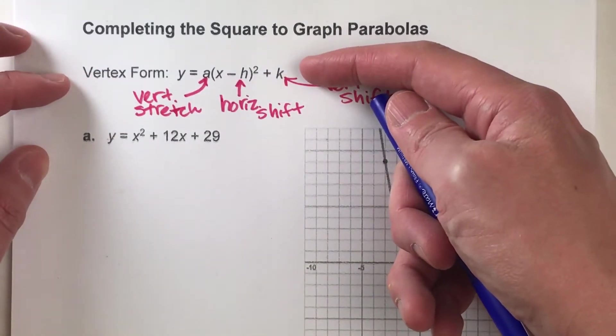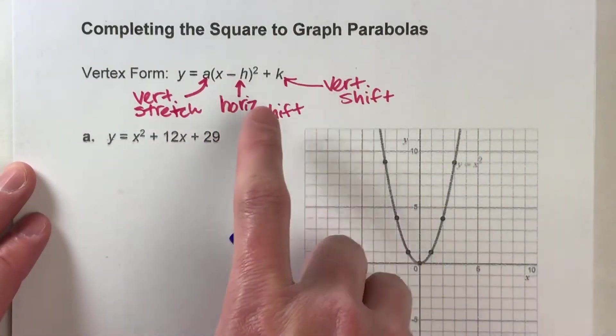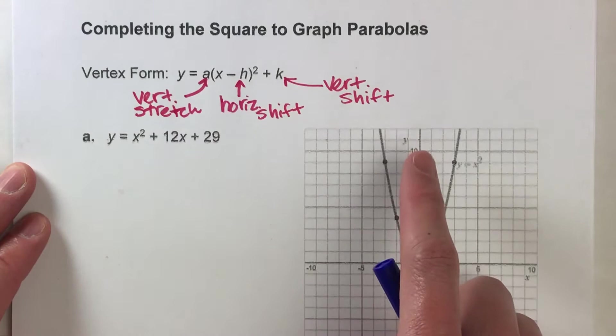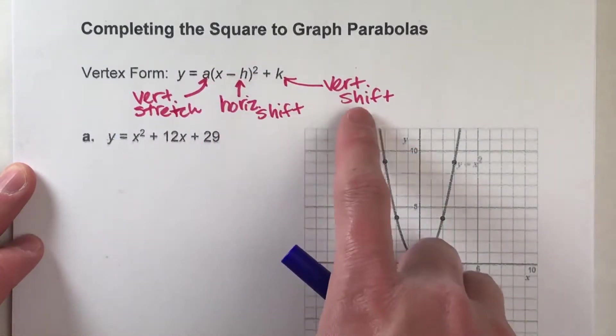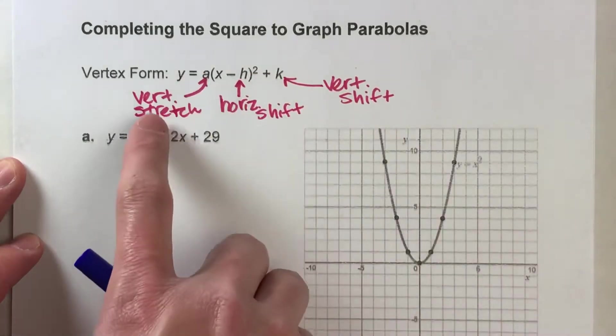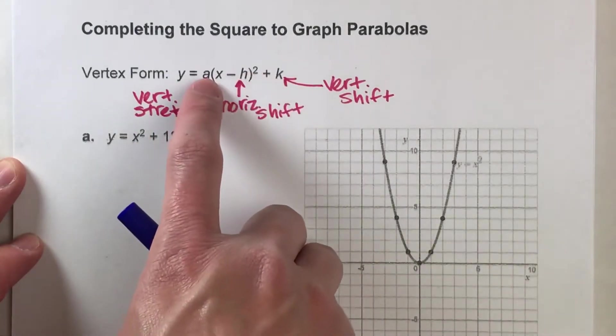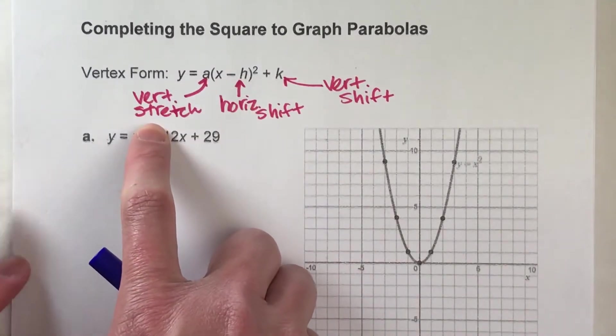And I've done videos on how to graph equations in vertex form, because there's some key numbers in here that tell you what the graph is going to look like. For example, the number inside the parentheses is the horizontal shift. The number added at the end is the vertical shift. And if we have a number multiplied on the outside of the parentheses that's being squared, that's your vertical stretch.